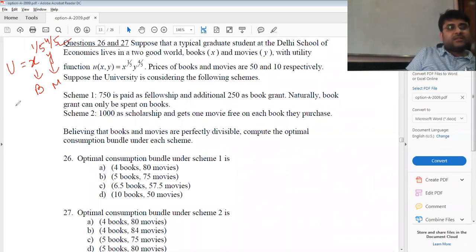Since this is a Cobb-Douglas utility function, expenditure on X by expenditure on Y will be in the ratio 1/5 by 4/5. Basically, in the ratio 1 is to 4. Expenditure on X divided by expenditure on Y will be in the ratio 1 is to 4.